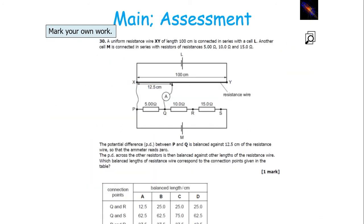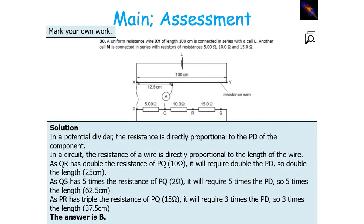In a circuit, the resistance of a wire is directly proportional to its length, and the resistance in a potential divider circuit is directly proportional to potential difference. QR has double the resistance of PQ — QR is 10 ohms and PQ is 5 ohms — so it requires double the PD and double the length, giving 25 centimetres. QS has 10 and 15 ohms totalling 25 ohms, which is 5 times the PD, so 5 times the length: 12.5 times 5 equals 62.5 centimetres. PR has triple the resistance of PQ at 15 ohms, requiring 3 times the PD and 3 times the length: 12.5 times 3 is 37.5 centimetres, giving answer B.